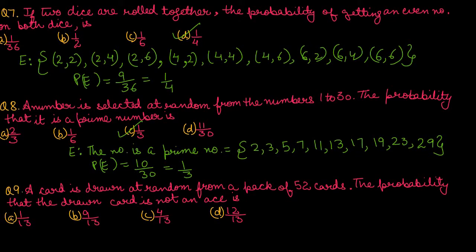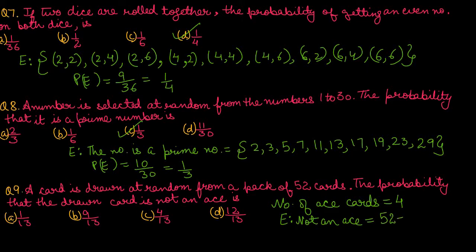Question number 9: A card is drawn at random from a pack of 52 cards. The probability that the drawn card is not an ace. We know there are 4 ace cards. We don't need an ace, so our favorable cases are 52 minus 4 equals 48. Total cases are 52. Probability of E is 48 divided by 52, which after cancellation gives 12 upon 13. Option number D is the correct one.